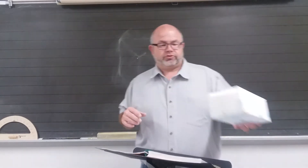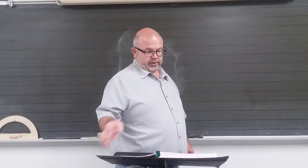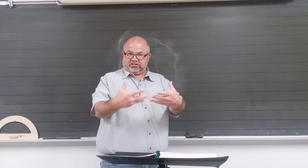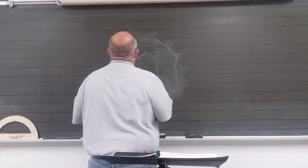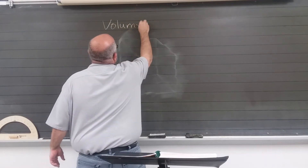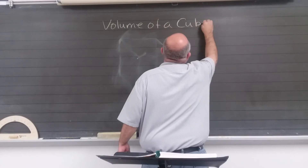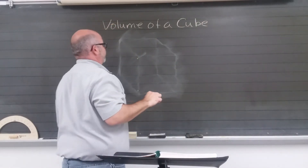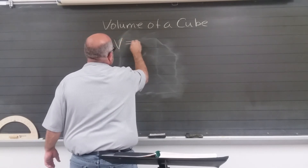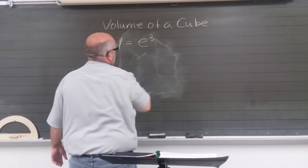Your length, width, and height are all exactly the same. The formula for the volume of a cube — how much space is inside a cube — is: volume equals edge cubed.